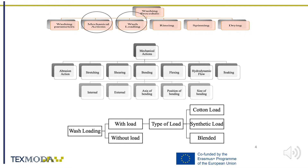Each of those mechanical actions may be split further, as has been done for bending. On the other side, wash loading may be with or without any additional load. In the case with load, it may be cotton, mixed or synthetic, as often written on the washing machine cycle selector.